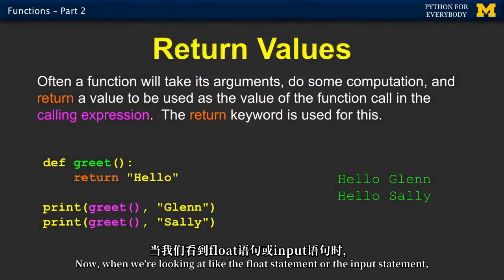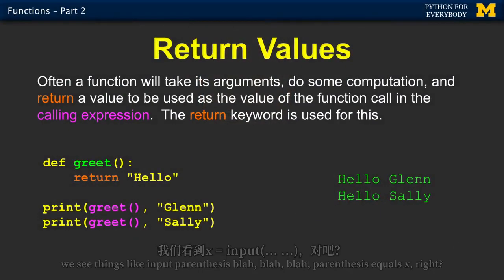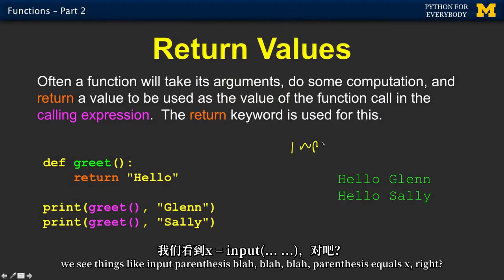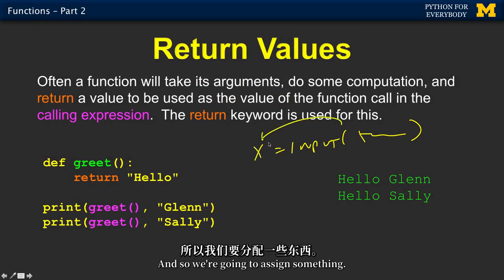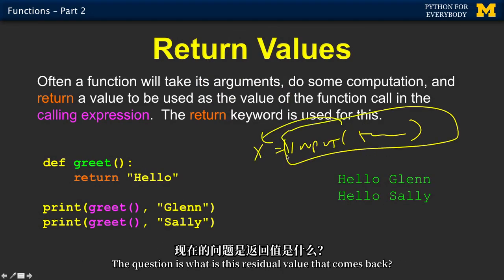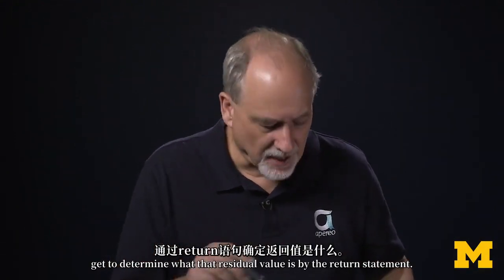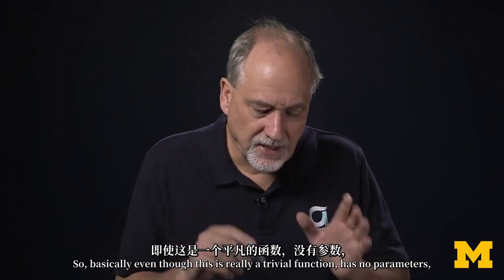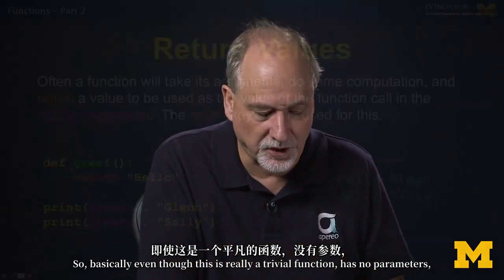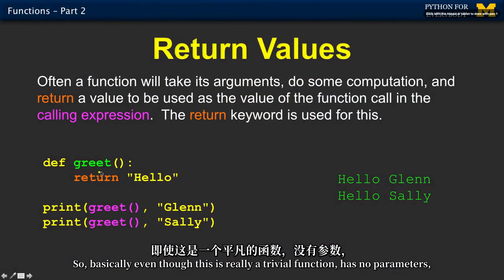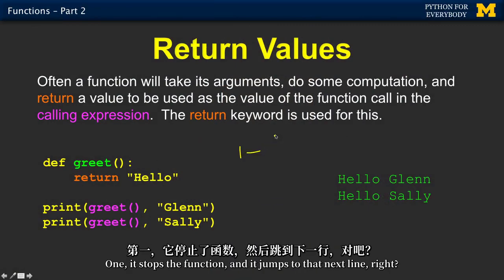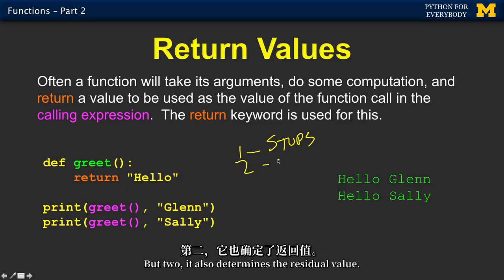Now, when we're looking at like the float statement or the input statement, we see things like input, parenthesis, blah blah blah, parenthesis, equals x, right? And so we're going to assign something. The question is, what is this residual value that comes back? And within the function, we as the writer of the function get to determine what that residual value is by the return statement. So basically, even though this is really a trivial function, has no parameters, the return statement does two things. One, it stops the function and it jumps to that next line, right? But two, it also determines the residual value.